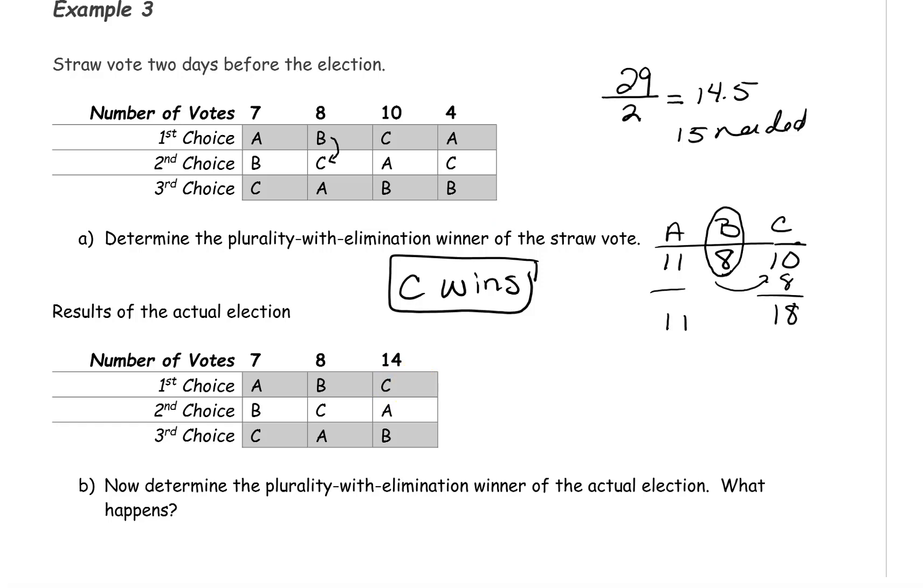We have the same number of voters, 29, so we still need 15 for a majority. We have the three candidates running: A, B, and C. Candidate A has seven first place votes. Candidate B has eight, and Candidate C has 14.